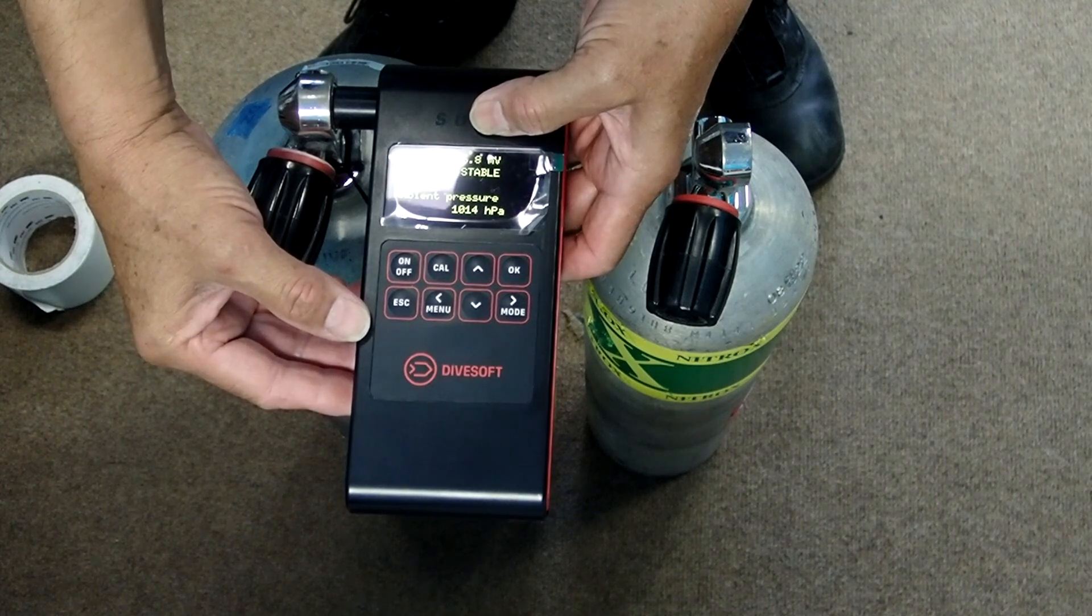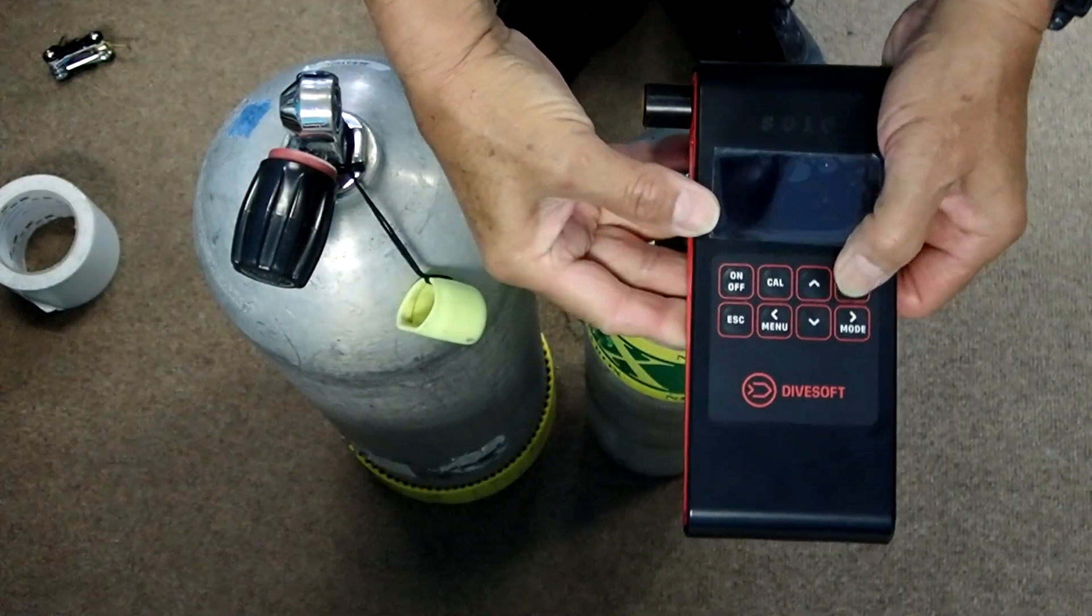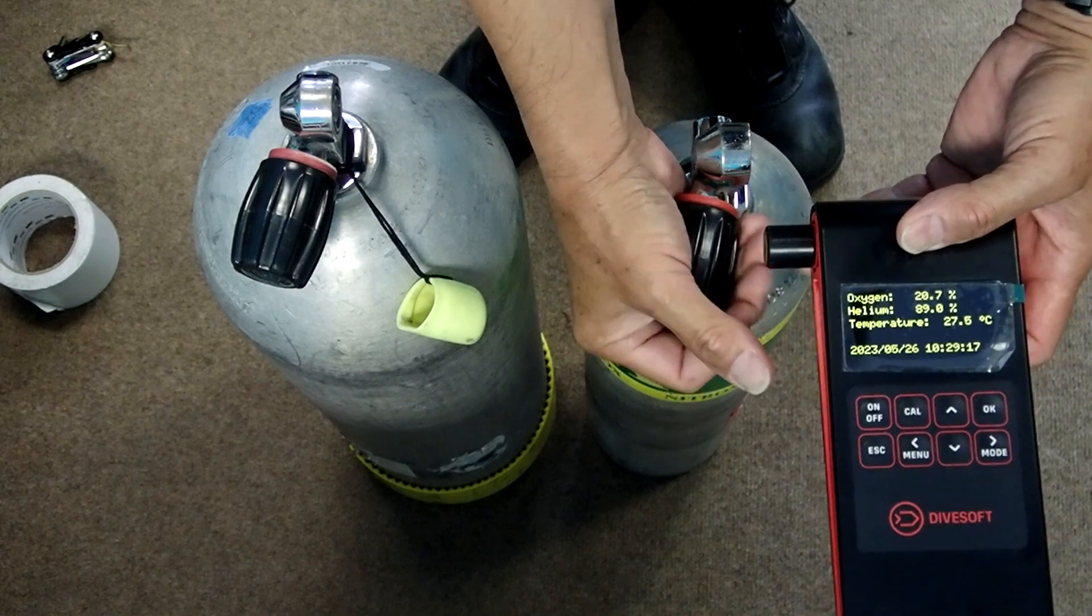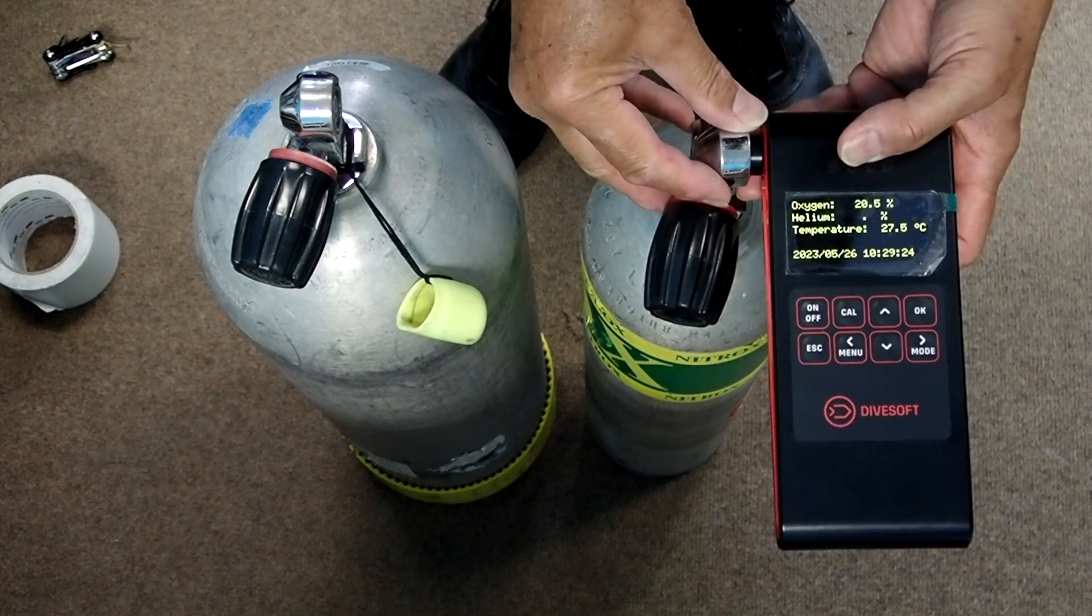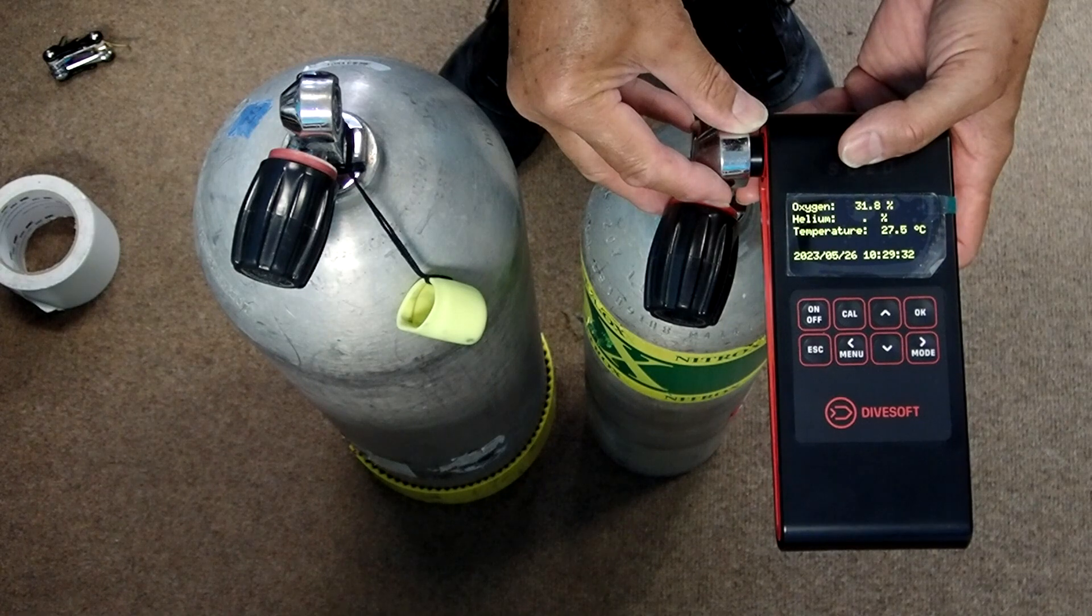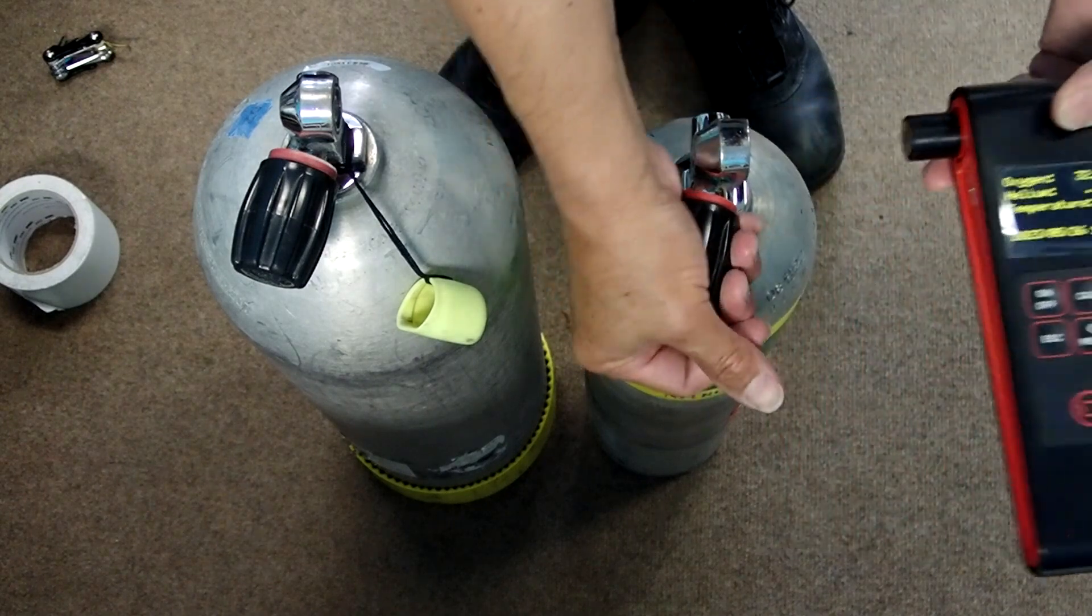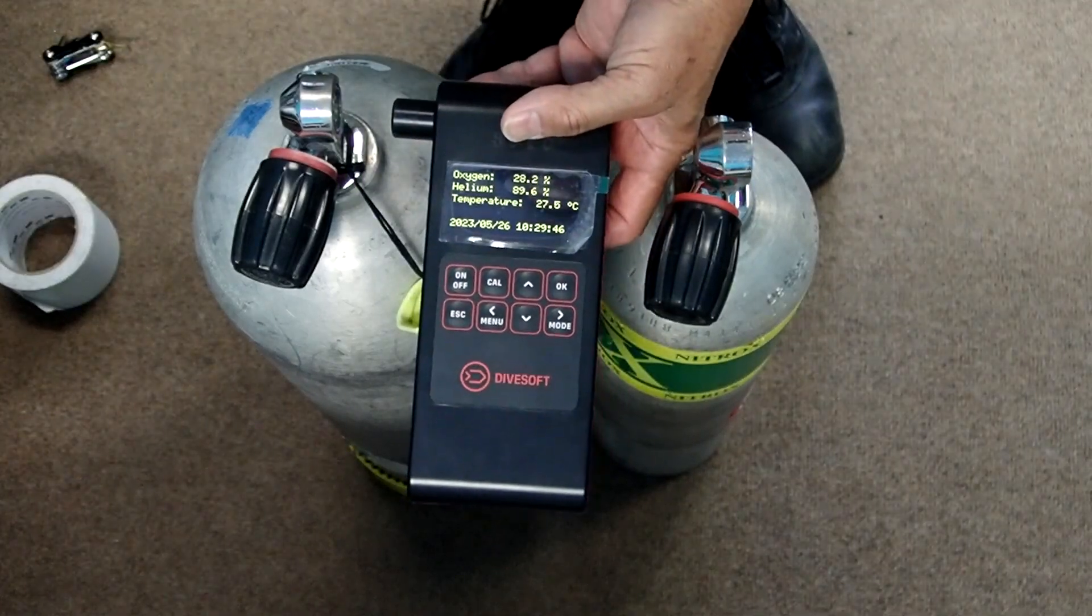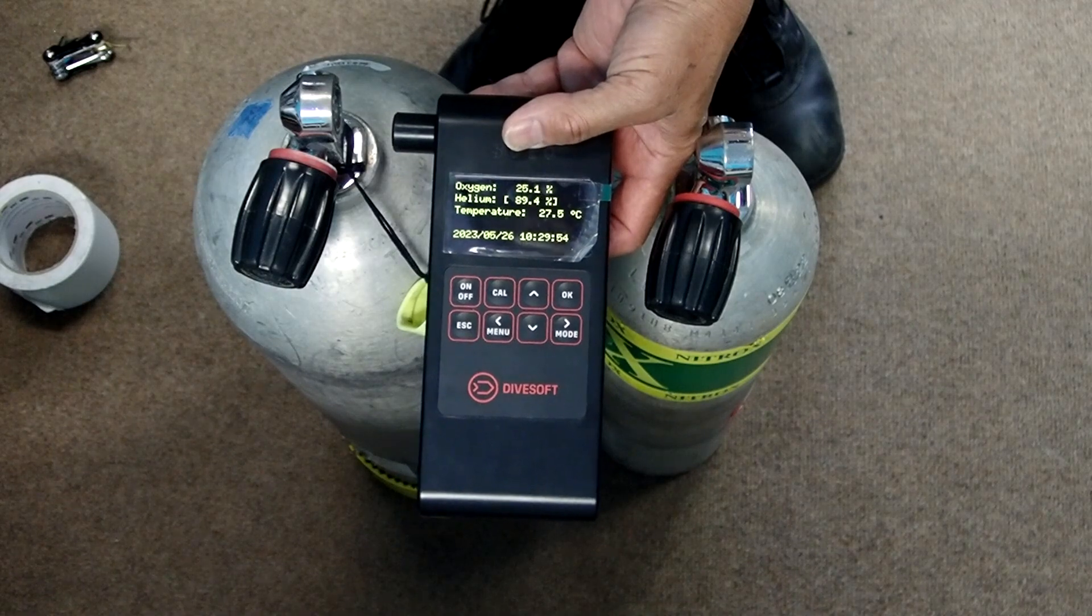The analyzer is calibrating itself. It's now saying that it's stable. We're going to turn this off and press OK. We are now going to analyze our decompression cylinder. We're going to get a similar flow rate and put our analyzer in. We're getting 31.9, so 32. Both analyzers had very similar readings. That's the process for calibrating and analyzing a tank with the Divesoft O2 analyzer.